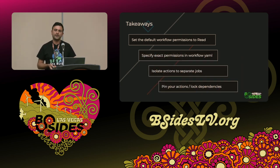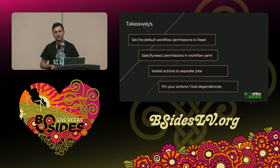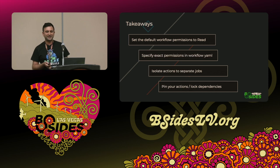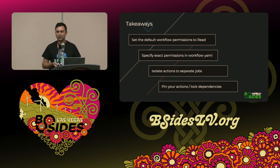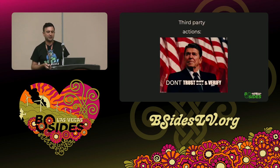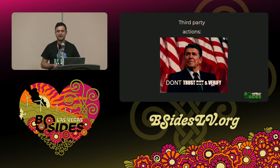And if you do find a third-party action you'd like to use which is unpinnable, you can always fork it, lock it, and change it from there. To conclude this talk, let's end with a quote by the late Ronald Reagan, which said about GitHub Actions: 'Don't trust and verify.'